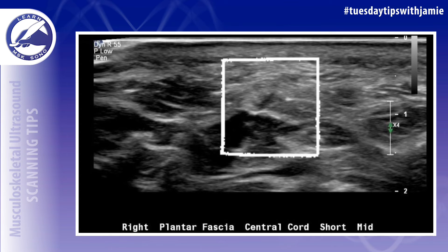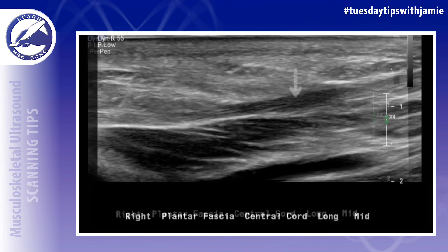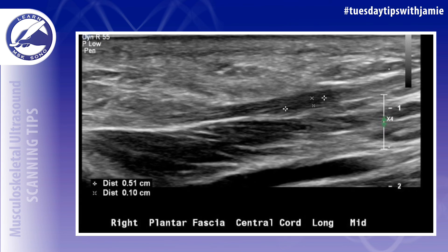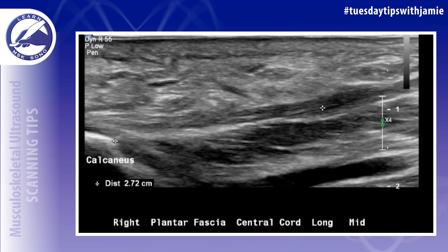Number four, there will be no vascularity present within the tear itself using PowerDoppler. In this example of the plantar fascia, the central cord initially only looked hypoechoic in the long axis, indicating focal plantar fasciitis. But there was a tiny partial thickness tear present that did not stand out until these techniques were utilized. I hope this tip helped.